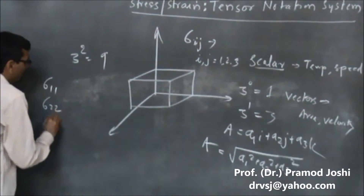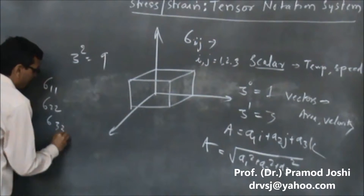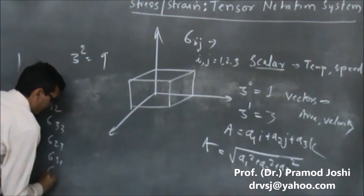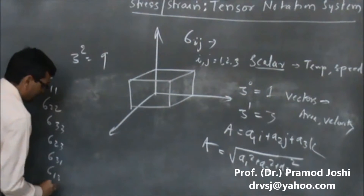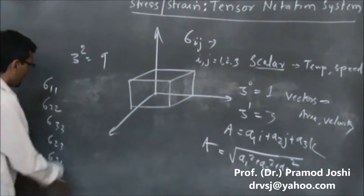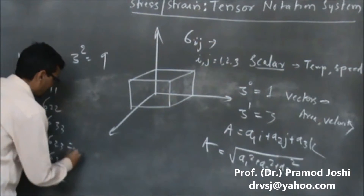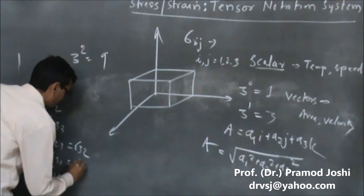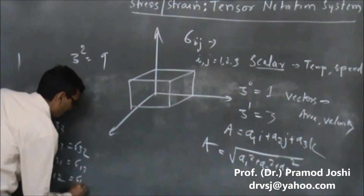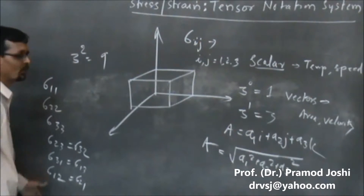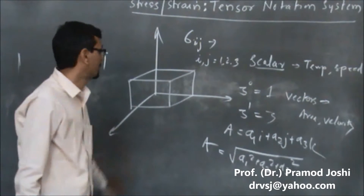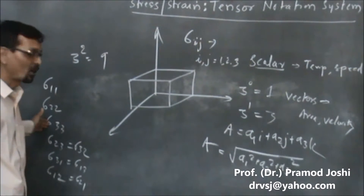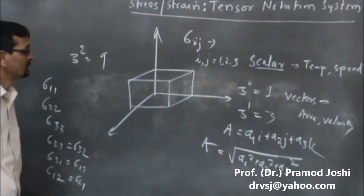These 9 stresses are: sigma 1-1, sigma 2-2, sigma 3-3, sigma 2-3, sigma 3-1, sigma 1-3, sigma 1-2, and the other three stresses sigma 3-2, sigma 1-2, sigma 2-1. So there are a total of 9 stresses. The first 3 are the normal stresses; the last 6 are the shear stresses.